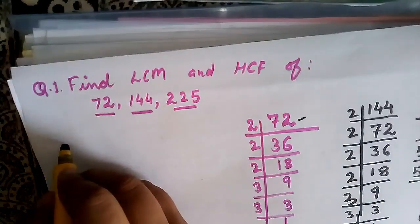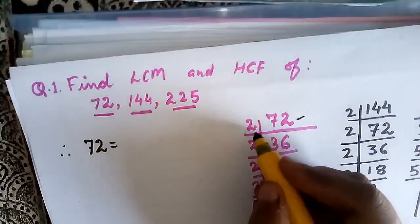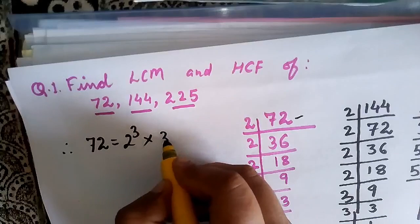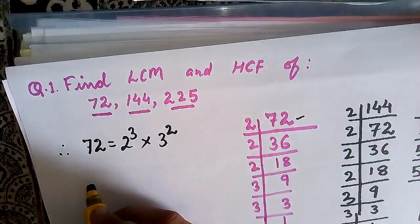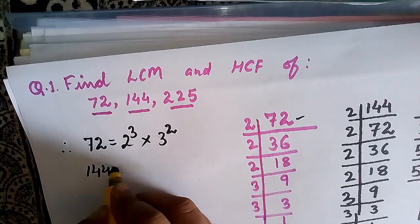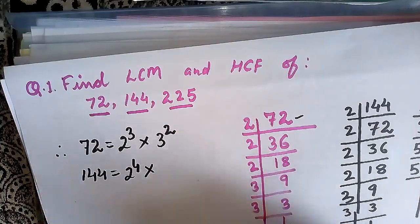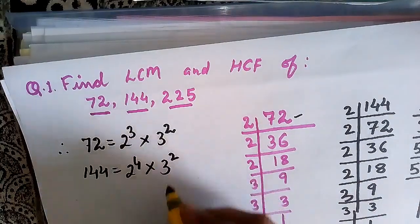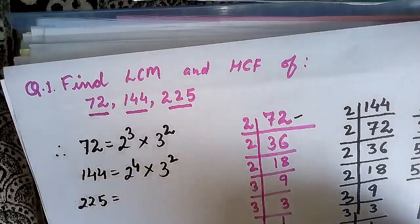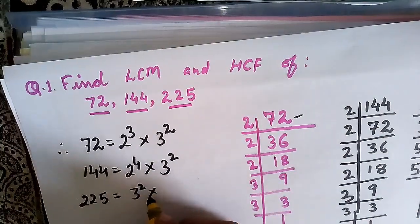Now let us write the prime factorizations. 72 = 2³ × 3². For 144, it is 2⁴ × 3². For 225, it is 3² × 5².